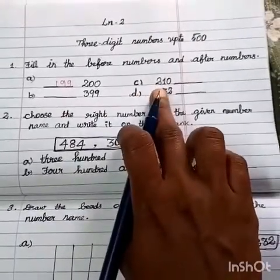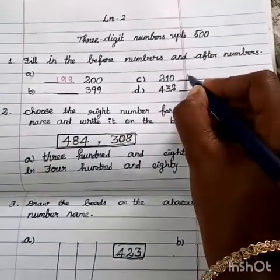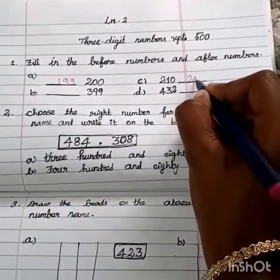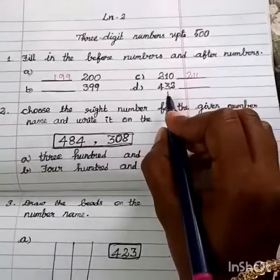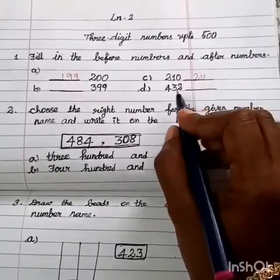Then question c, after 210, so 210 the after number is 211. Question d, 432 before 433. This is the before example, this is after example.